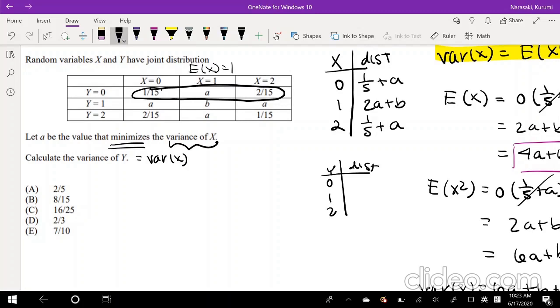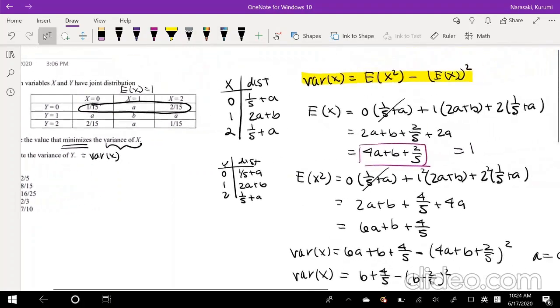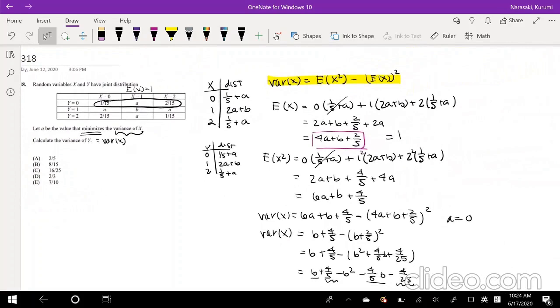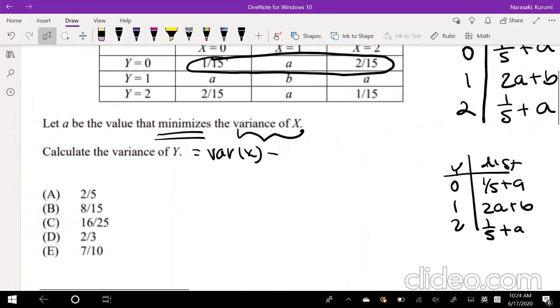Well, it's going to be this across. So that's 1 over 15 plus 2 over 15 plus a. Well, that's just equal to 1 fifth plus a, isn't it? And what would be the distribution for 1? Well, that's going to be 2a plus b. And what would it be for 2? That's going to be 1 fifth plus a. So as you noticed, the Y distribution is exactly the same as X. And because of that, because of the symmetry, the variance of X is equal to variance of Y, which is also equal to 2 fifths, as we derived earlier. So which is our answer number A.